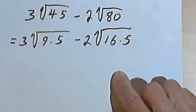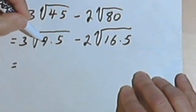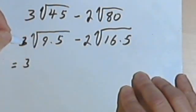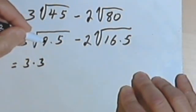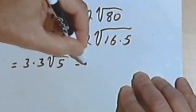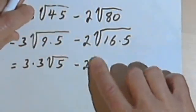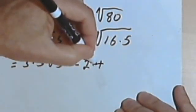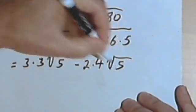So I'm going to have 16 times 5 over here. Now taking this first expression and pulling out the square root of 9, I'm going to have 3, that's the first 3 that I have, times 3 from the square root of 9, times the square root of 5, minus 2 times the square root of 16 is 4, so 2 times 4. And I've still got the square root of 5 left.